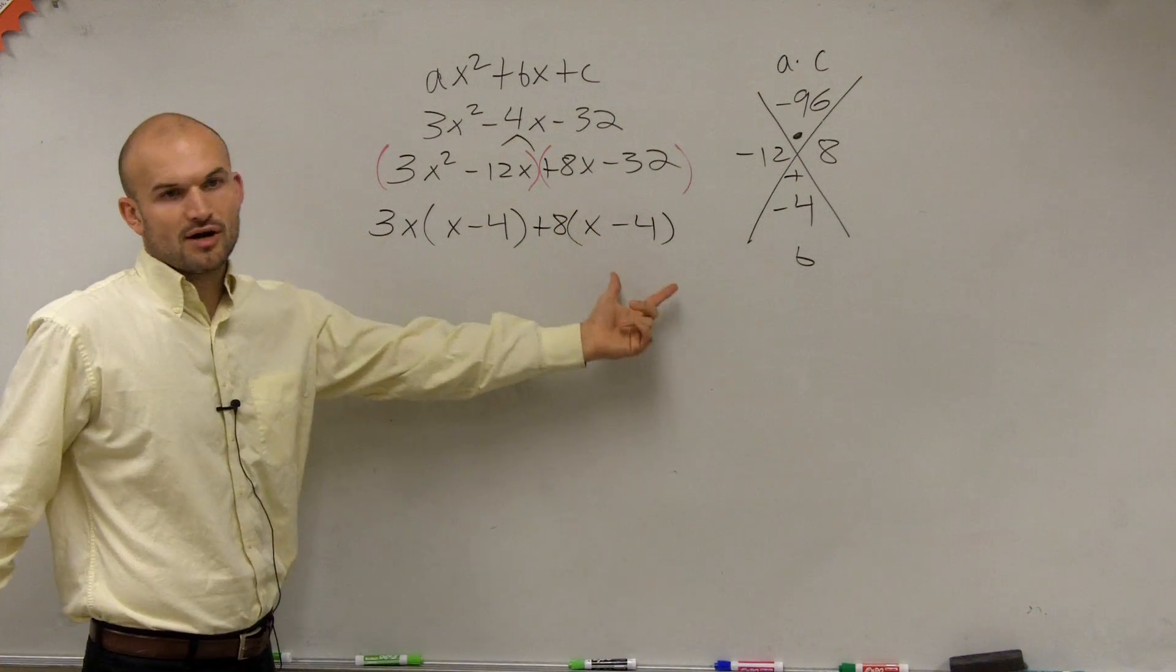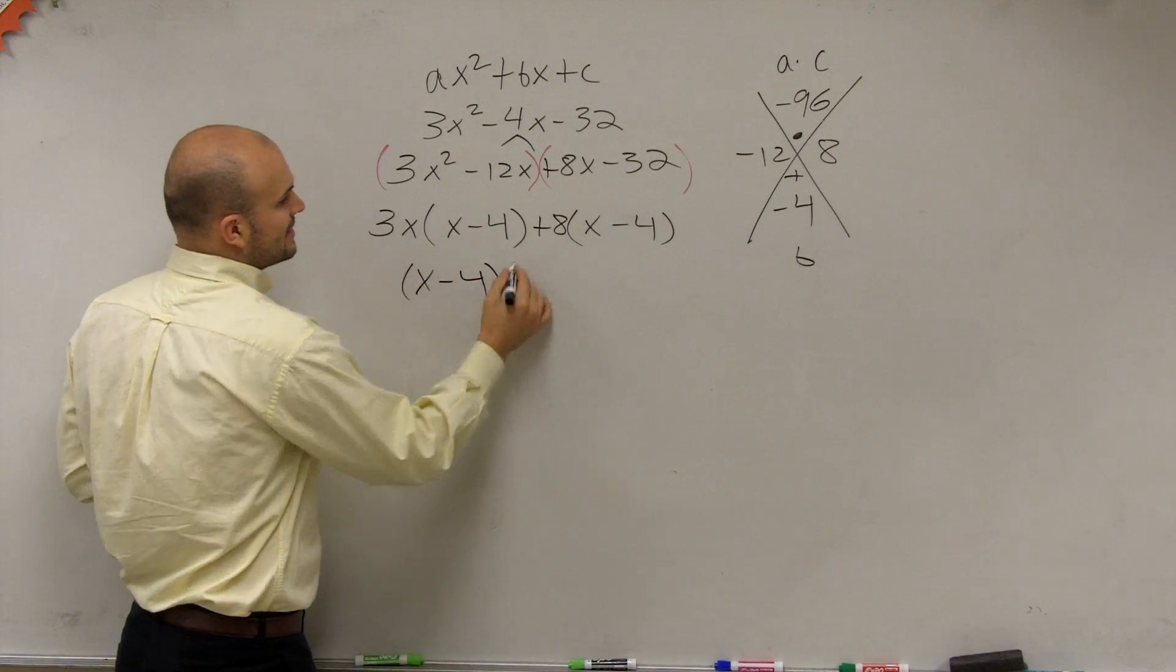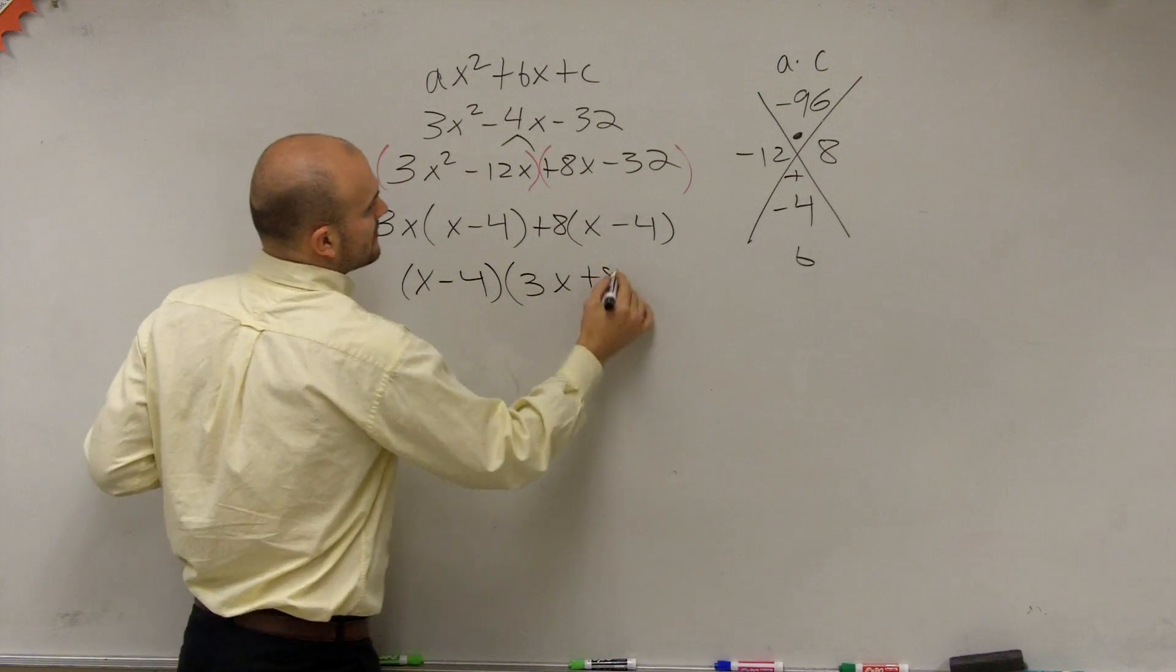Now the second part of factoring by grouping is you factor out what else they have in common, which is an x minus 4, which then leaves you with a 3x plus 8.